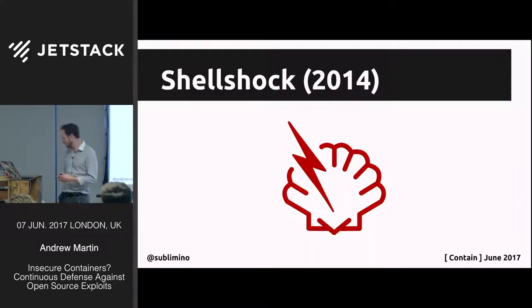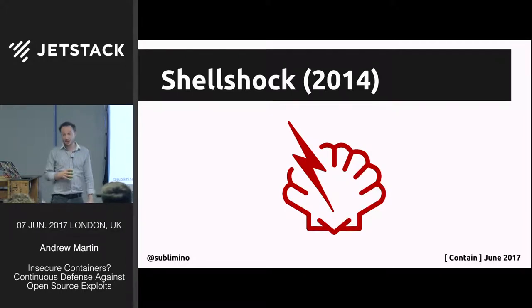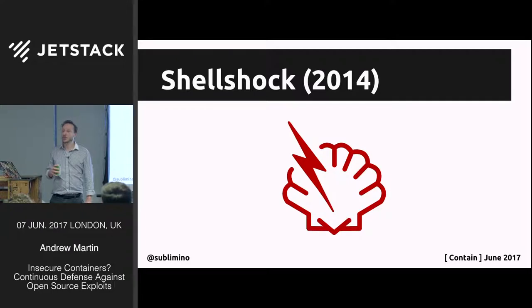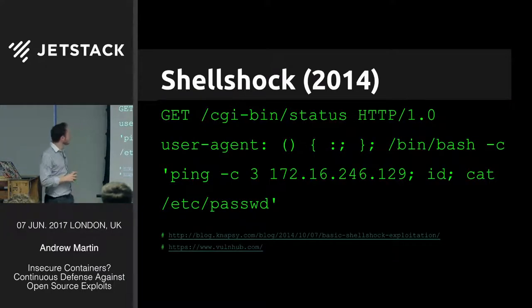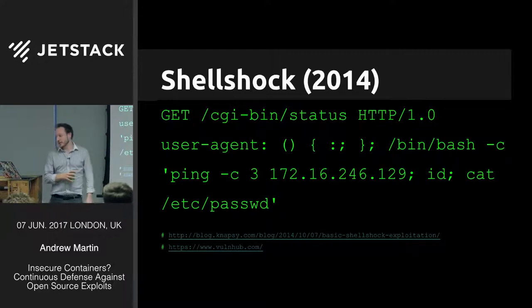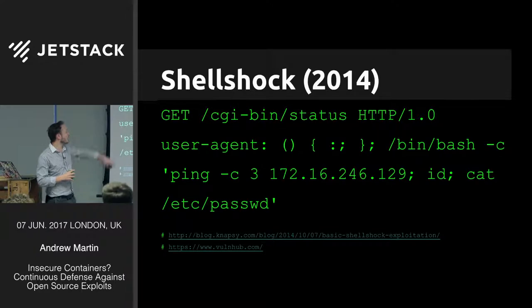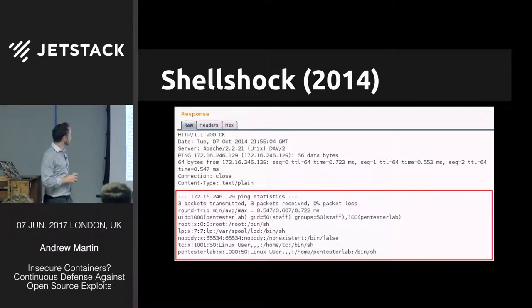Next: Shellshock — a bash vulnerability allowing privilege escalation by adding code to a specially crafted environment variable, with the calling process executing the extra code in a context it shouldn't be allowed. Impact included CGI web applications, sshd, DHCP clients, OpenVPN, all Linux boxes, all FreeBSD boxes, and all post-1991 Unix and Mac deployments — essentially every Unix-based system. In a demo HTTP request, the User-Agent header contains the payload: a function definition (parentheses), a no-op within the curly braces, then the exploit — in this case pinging a host and dumping /etc/passwd. This was fired using Burp Suite; you can see data that should never be leaked in a standard HTTP call.